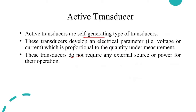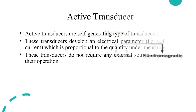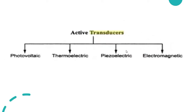These transducers develop electrical parameters — that is, voltage or current — which is proportionate to the quantity supposed to be measured. Active transducers are classified as photovoltaic, thermoelectric, piezoelectric, and electromagnetic, based on the principle of operation.